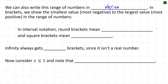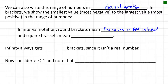We can also write this range of numbers in interval notation. In brackets, we show the smallest value — the most negative — up to the largest value — the most positive — in the range. Round brackets mean the value is not included, like an open dot. Square brackets mean the value is included, like a filled dot. Infinity always gets round brackets because infinity isn't a real number.